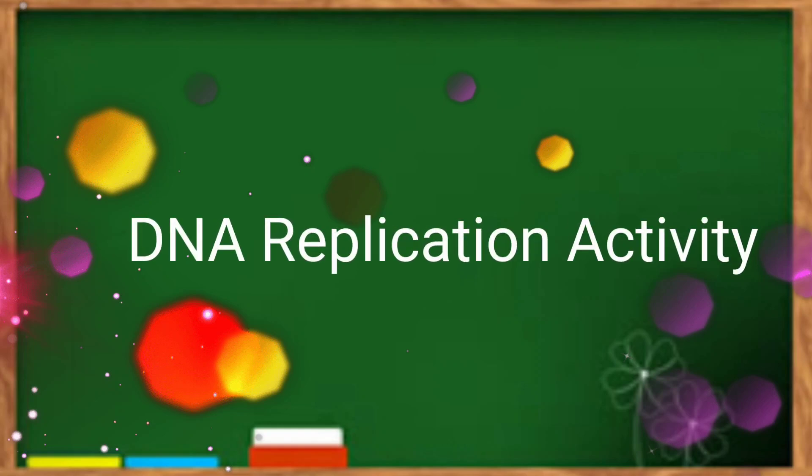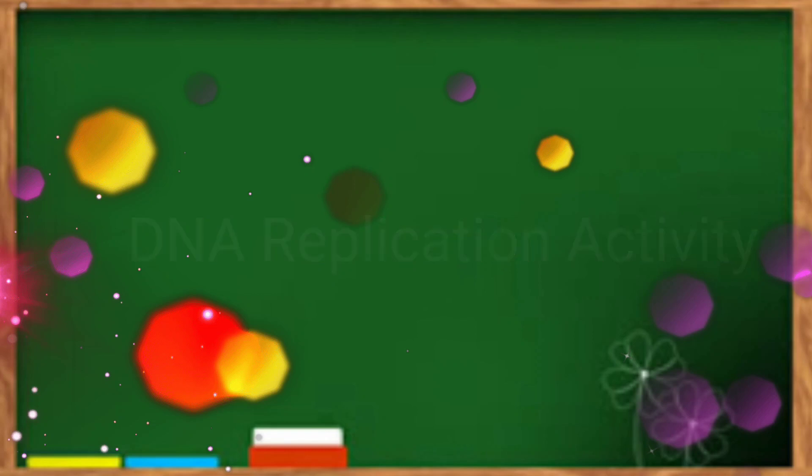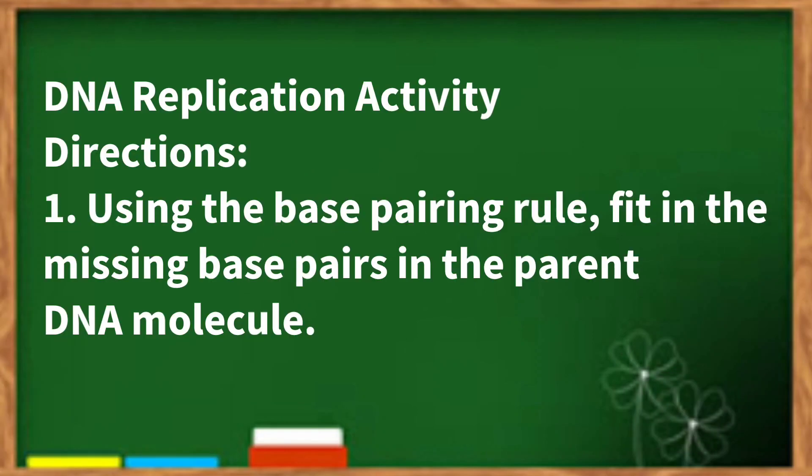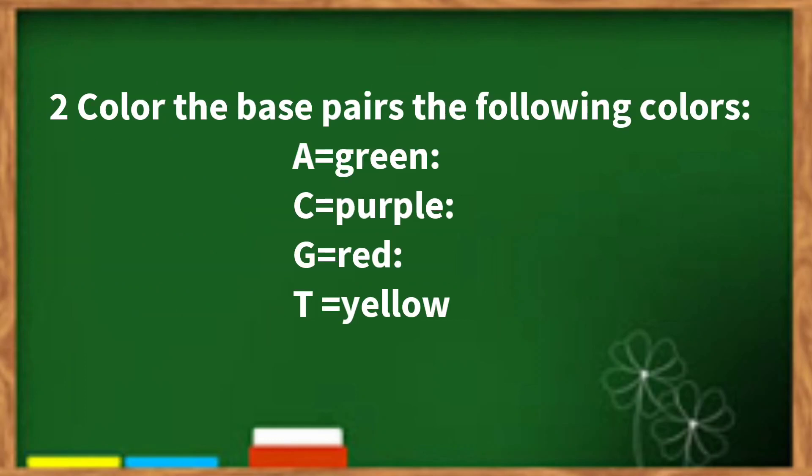DNA replication activity. Directions. 1. Using the base pairing rule, fit in the missing base pairs in the parent DNA molecule. 2. Color the base pairs the following colors.